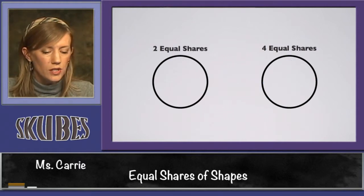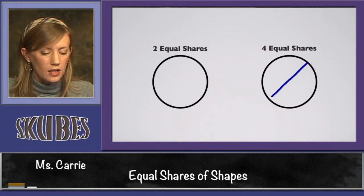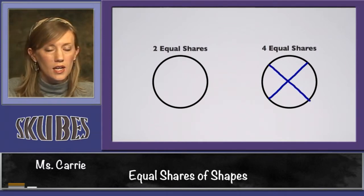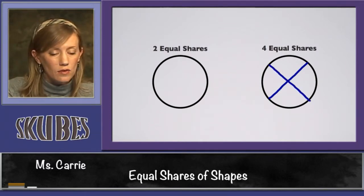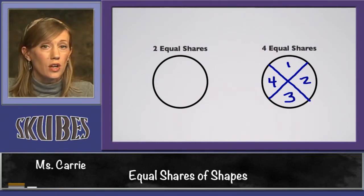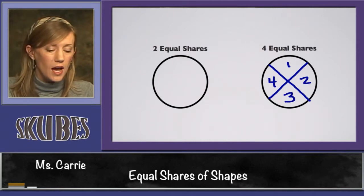We could also cut it this way and cut it this way, and again, that gives us one, two, three, four equal shares that are the same size.